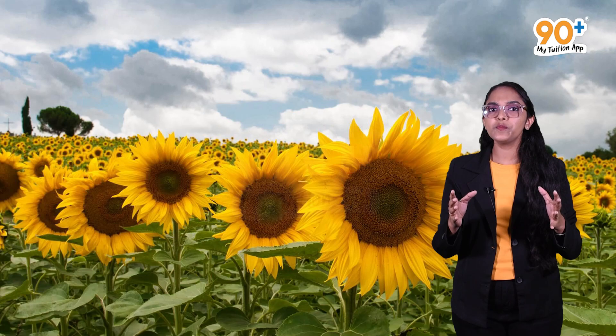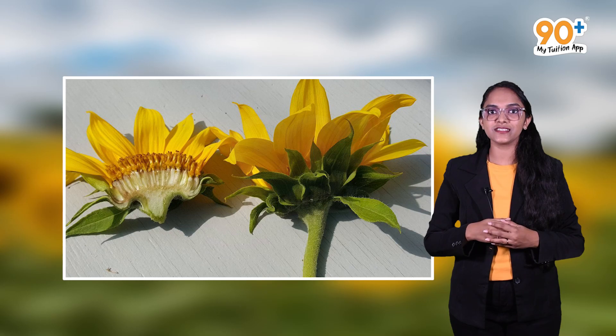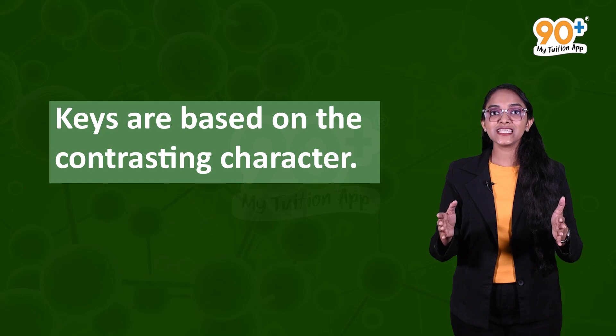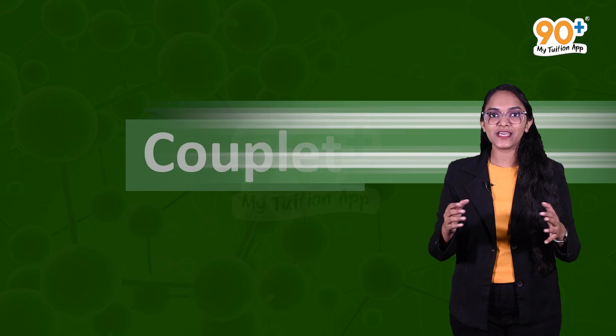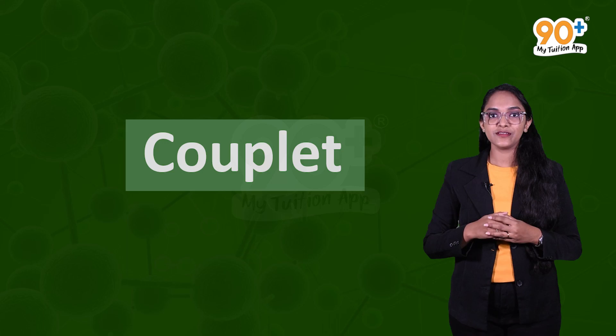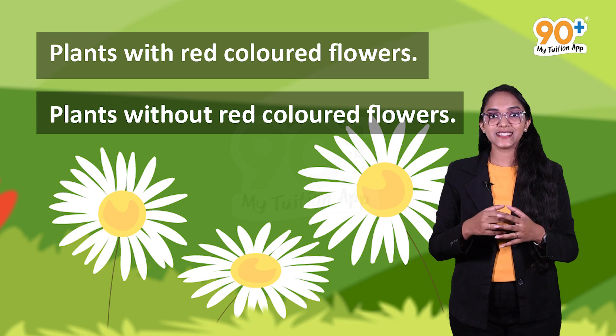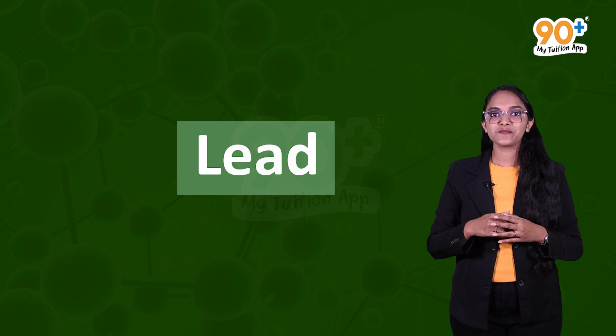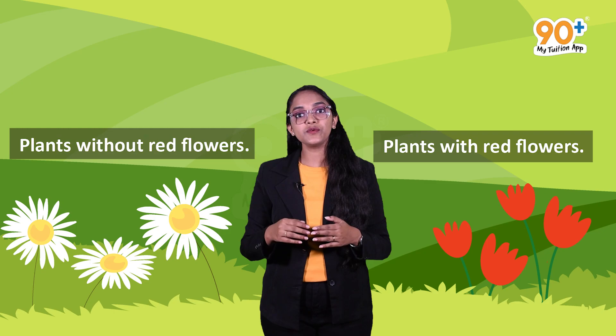Keys are based on contrasting characters, generally in pairs called couplets. For example, taking color as a character, we can say 'plants with red flowers' and 'plants without red flowers' form a couplet. Each statement in a couplet is called a lead. Since we make choices between opposite options, keys have an analytical nature.